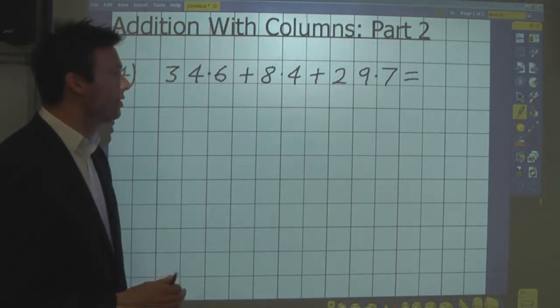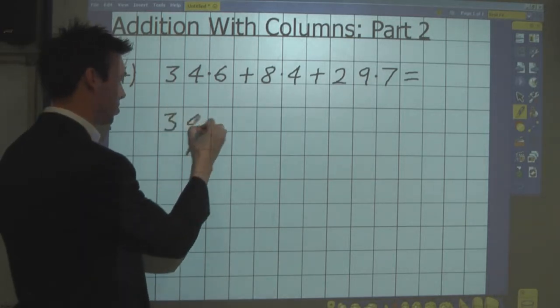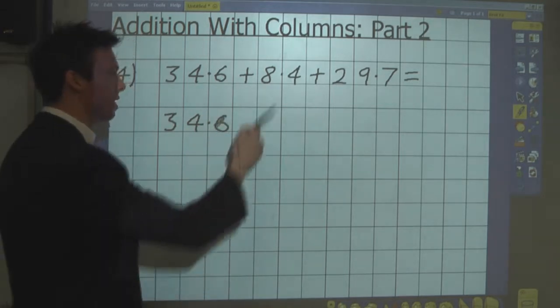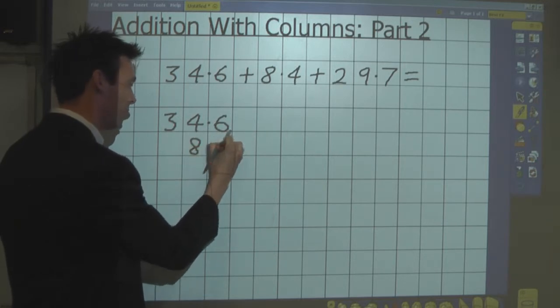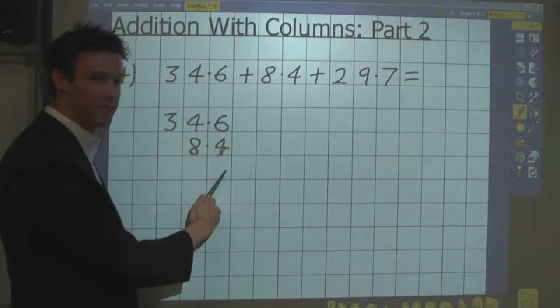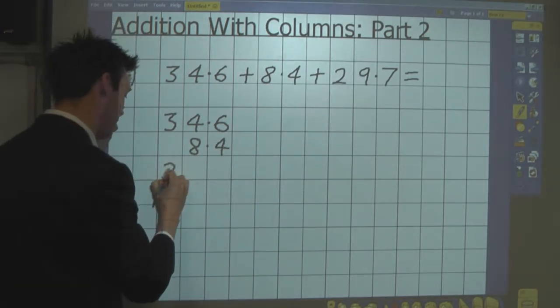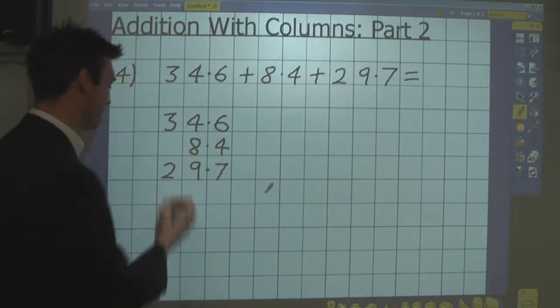So in this method I line the digits up in columns. I start with 34.6, and then I line up 8.4 so I make sure the units are lined up and the tenths are lined up. And 29.7, I line up the tens, the units, and the tenths.